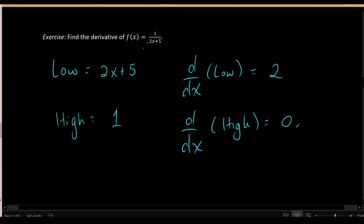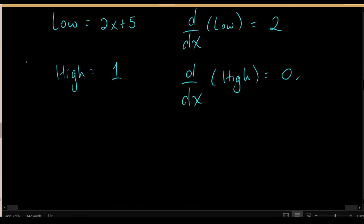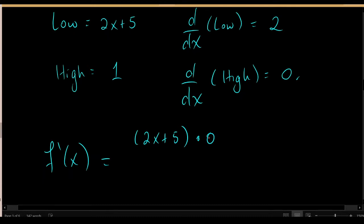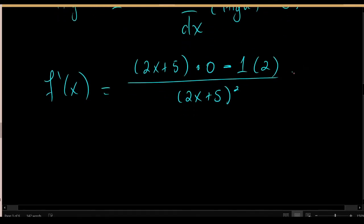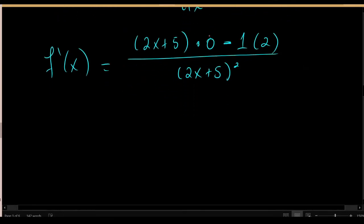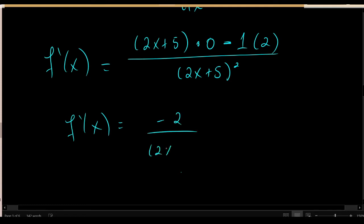So what's the derivative of this entire fraction? Using the quotient rule: low d high gives 2x plus 5 times 0, minus high d low gives 1 times 2, all over the low function squared, which is 2x plus 5 quantity squared. We're not obligated to simplify, but since multiplying by 0 makes that first term vanish, we simplify to negative 2 divided by 2x plus 5 quantity squared.